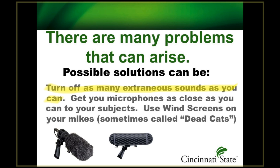Another way to get rid of reverb is to get your microphone as close as you can to your subject. The closer you get the microphone, the more it will just pick up that person and makes it much less likely you'll hear the reverb, because the person's voice will be so much more powerful than the extraneous room sound. Also, the closer the microphone is to the person, the less sensitive you have to make it — it will still pick up the voice very strong, but because you're not making it overly sensitive, it's less likely to pick up that reverb or other unwanted sounds.